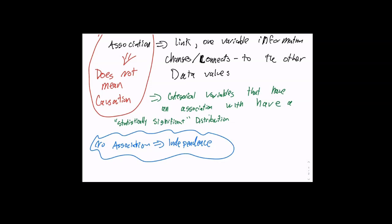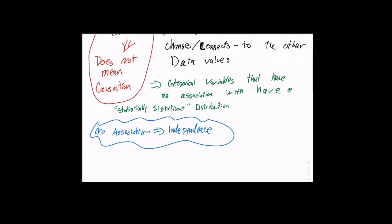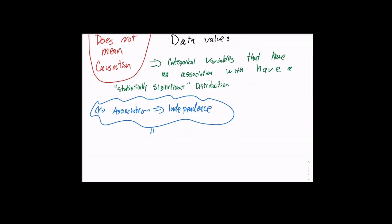It's asking you about the other — asking about no association. So if you say 'yes,' you've got to be careful: are you saying yes there's an association, or yes they're independent — meaning yes, there's no association? You've got to be clear. Use the words from the text. When there's no association, when two variables are independent, the distributions will look mostly the same.